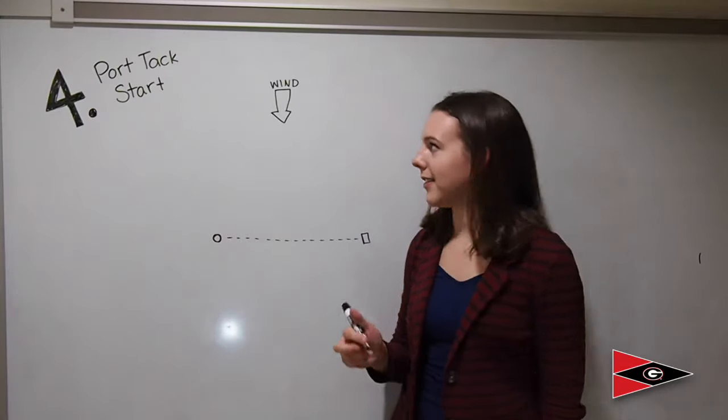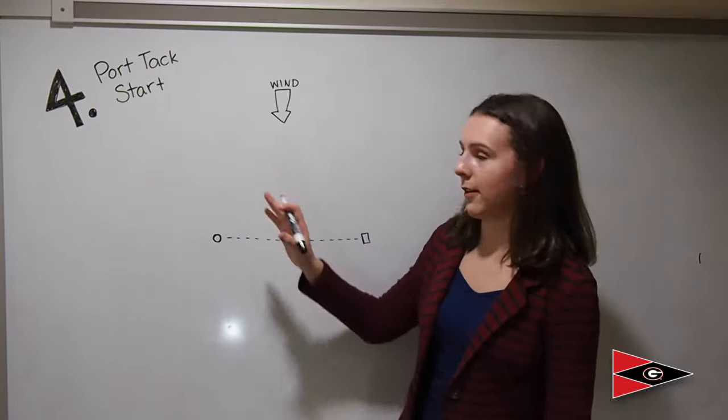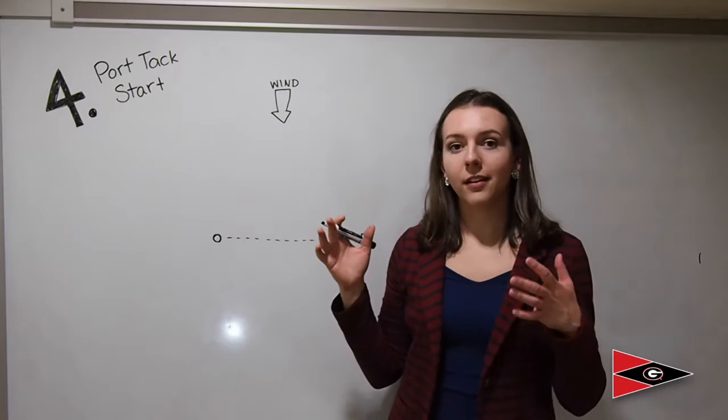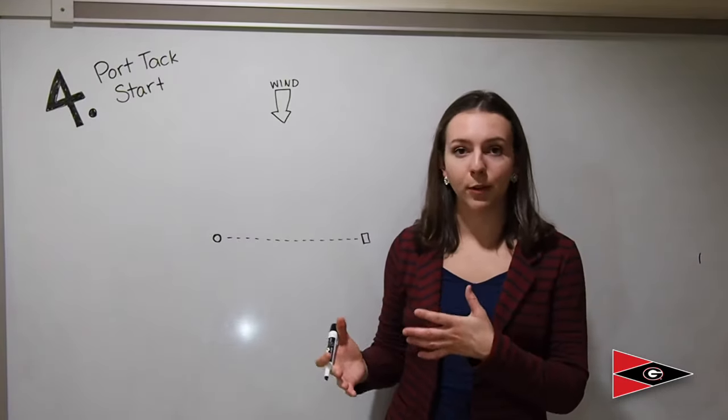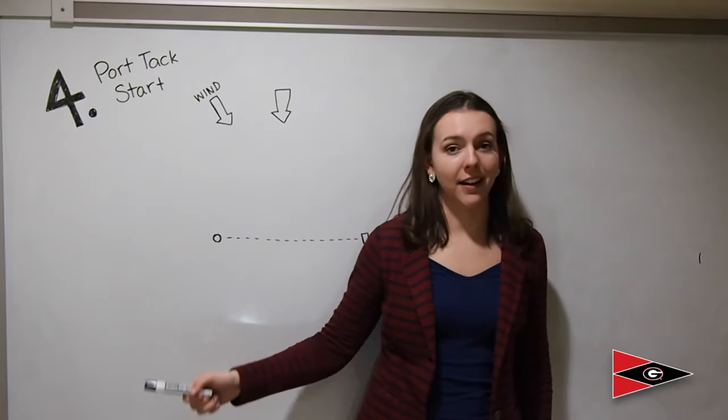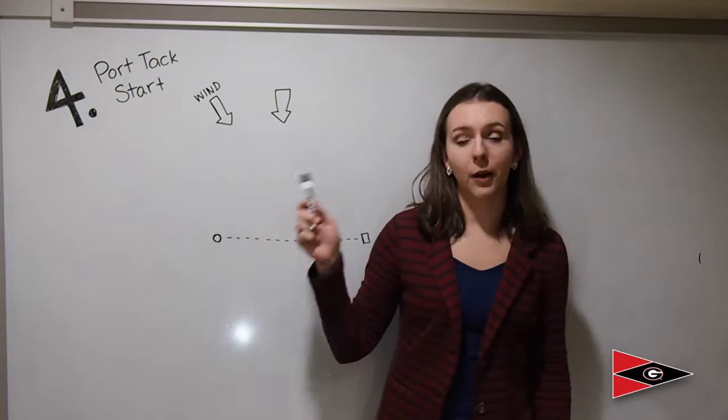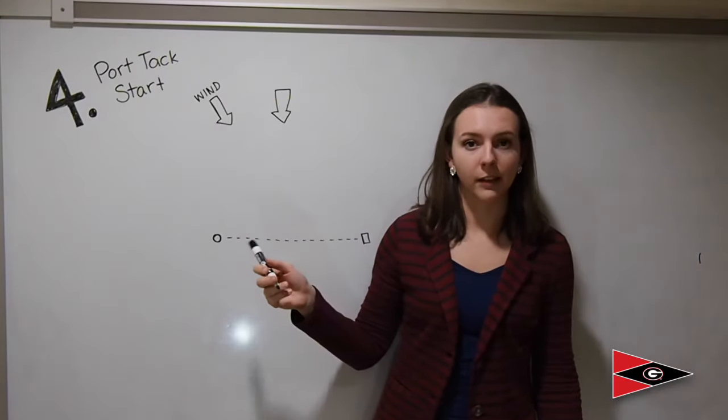But in some cases the wind isn't perfectly perpendicular to the starting line like this, and it'll be off to one side or the other. In which case the port tack might be favored more than the starboard tack. If the wind is off to the left from center this will mean that the port tack is favored for the start, but sometimes it's a little difficult to recognize that. I'm going to show you how I figure out when the wind is off to the left.